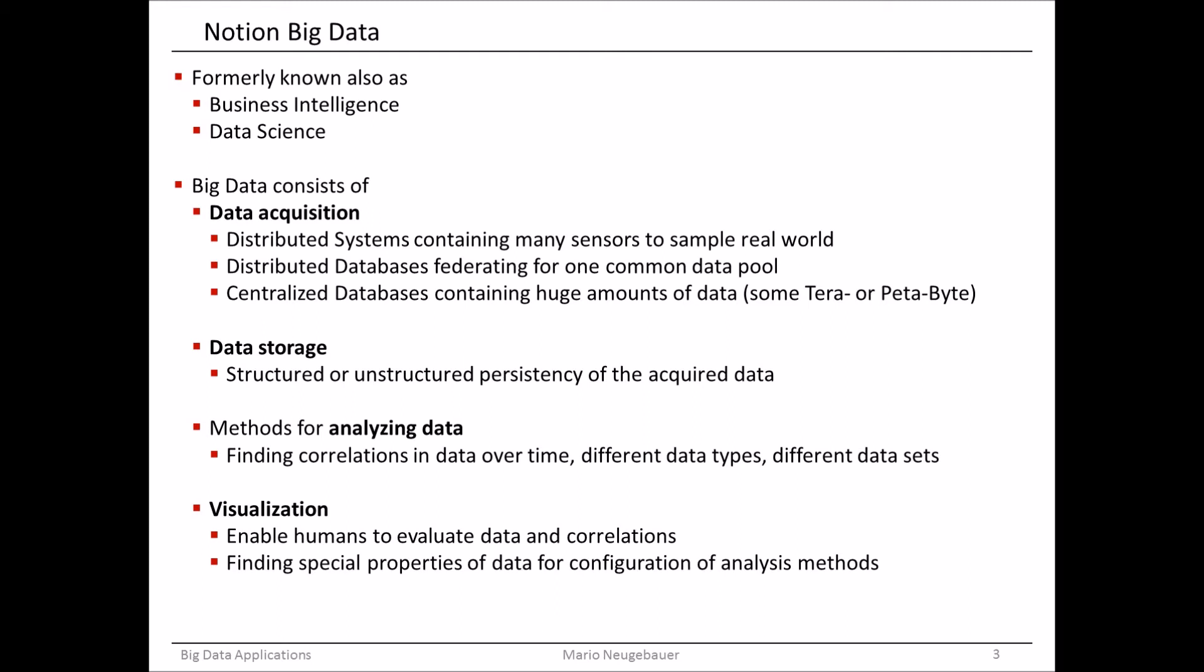And if we look into big data and what it consists of, then we have different parts a big data application could consist of. There's first data acquisition. To acquire big data, you first have to acquire the data in certain ways. This can be done with different tools, with different methods. For example, you can use a distributed system where many sensors are deployed somewhere in the real world, to monitor a certain process, a certain behavior or certain state of circumstances of the environment. So main thing there is to monitor with sensors the real world.